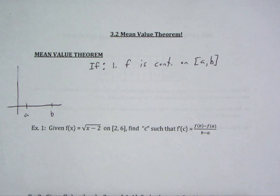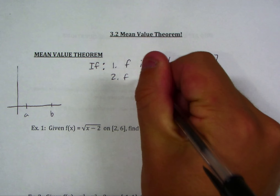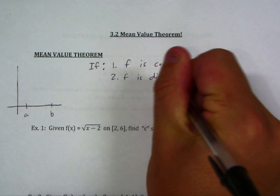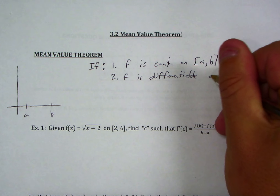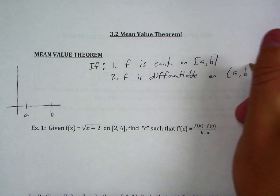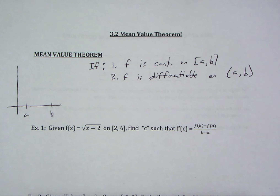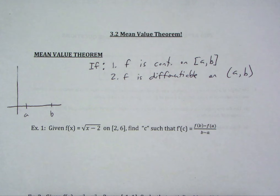The second condition is that our function has to be differentiable on the open interval. None of our other theorems have needed differentiability. What this means is we need our function to not have any sharp turns, and it can't have any vertical tangent lines.